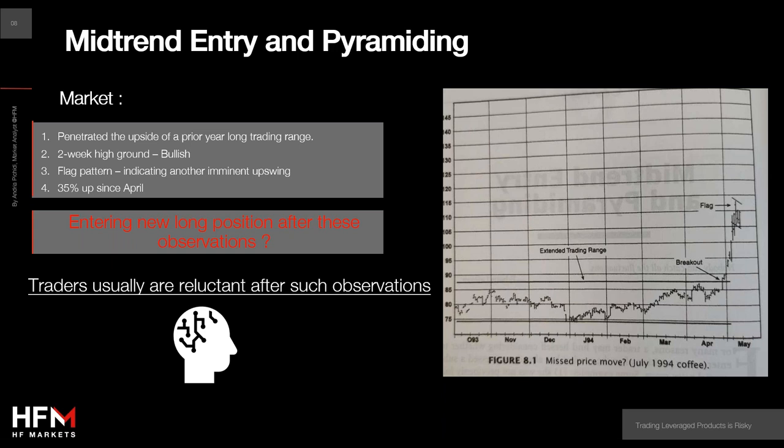This figure shows the coffee market in mid-May 1994. As you can see, there are no indicators — it's just a chart, price only, pure price action trading.